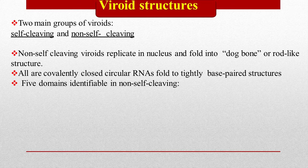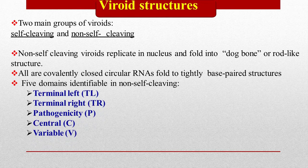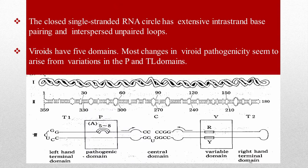All are covalently closed circular RNAs that fold into tightly base-paired structures. Five domains are identifiable in non-self-cleaving viroids: terminal left (TL), terminal right (TR), pathogenicity (P), central (C), and variable (V). The closed single-stranded RNA circle has extensive intrastrand base-pairing and interspersed unpaired loops. Most changes in viroid pathogenicity seem to arise from variations in the P and TL domains.